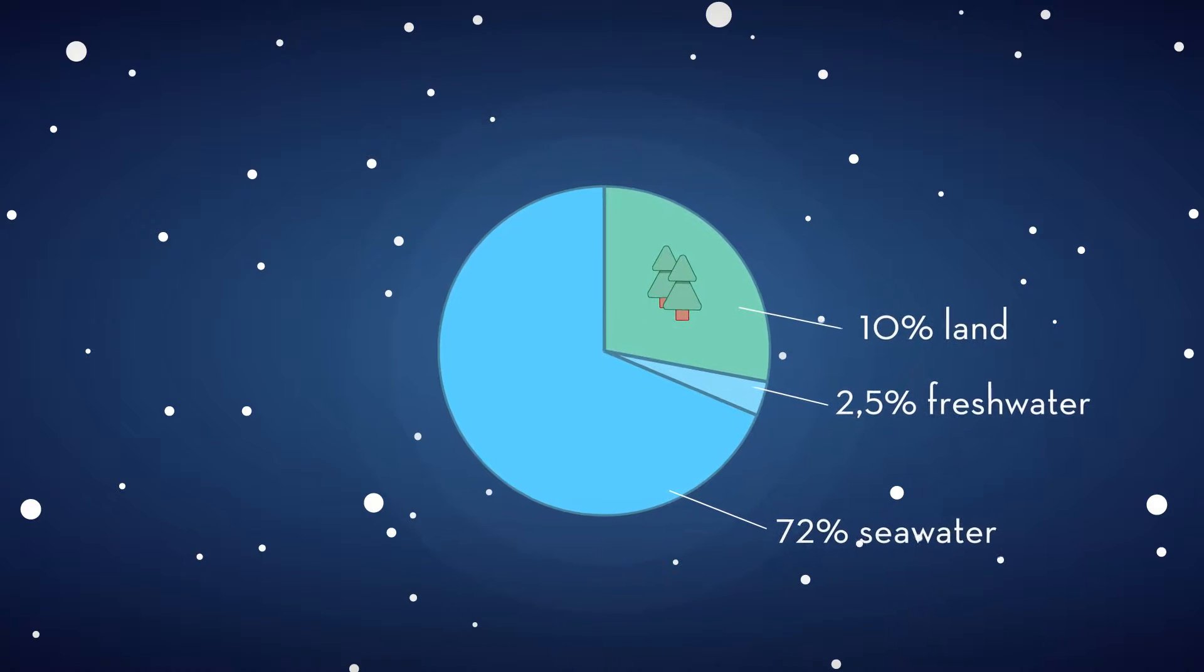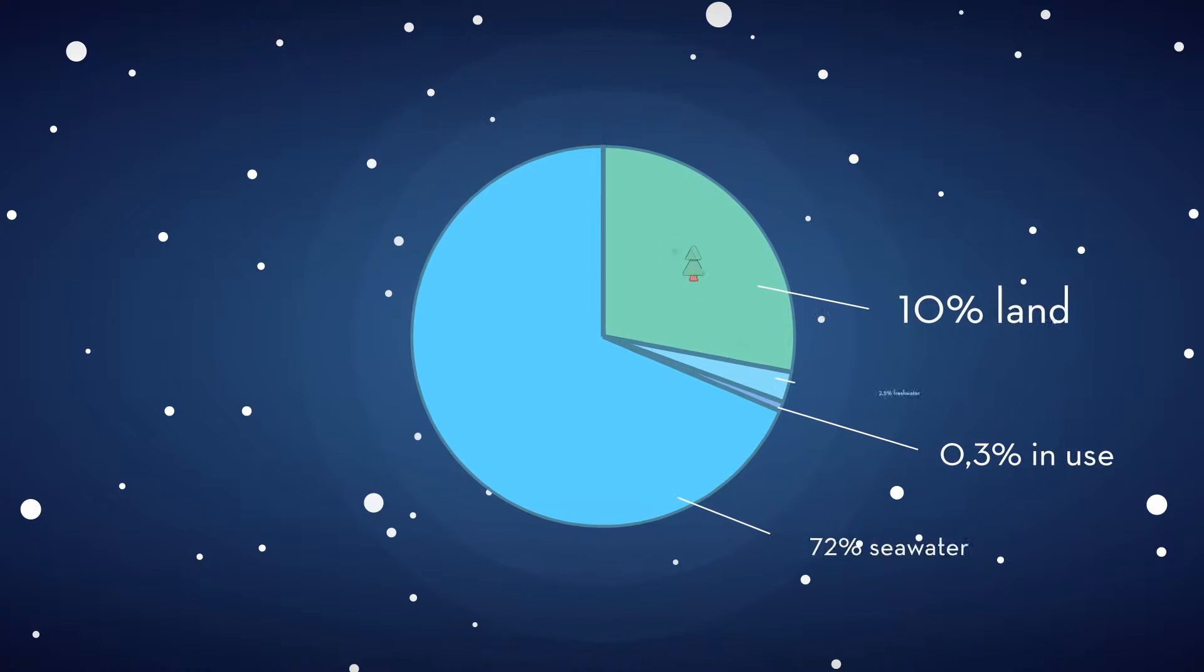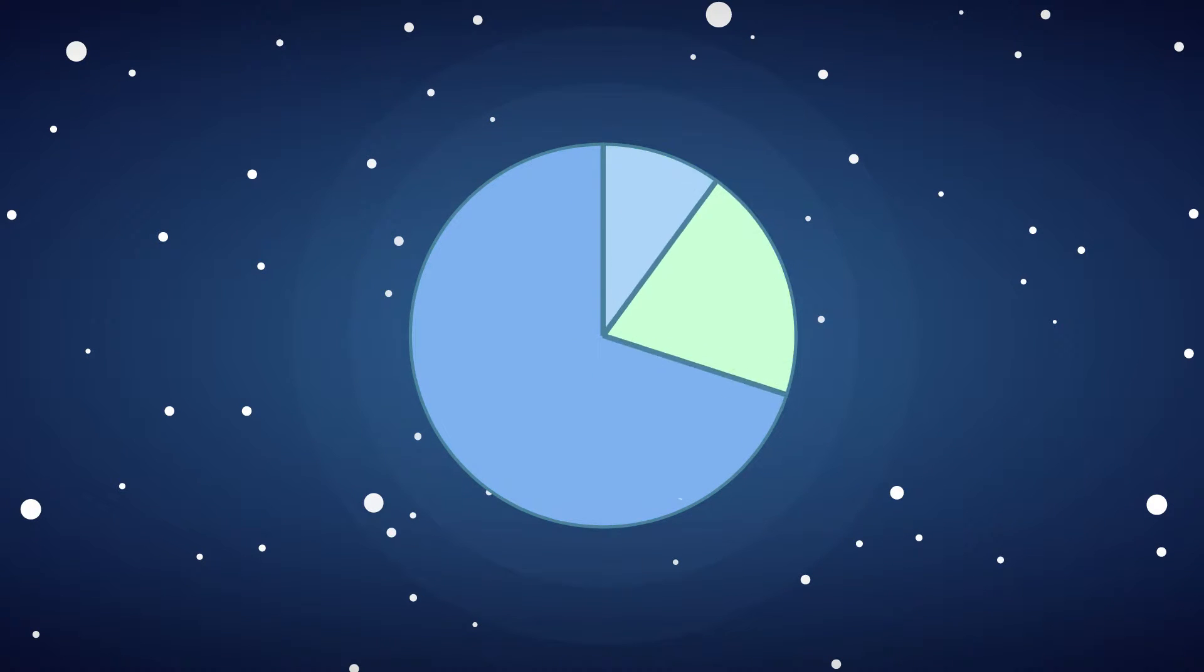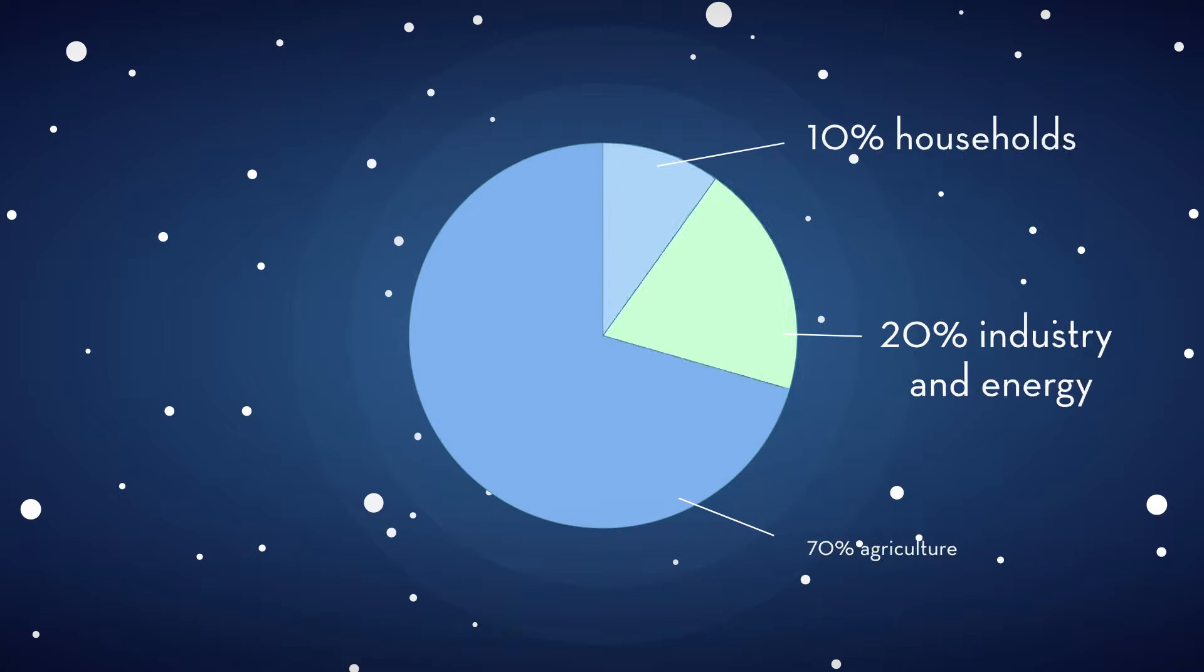Although 2.5% of the water is fresh water, we have access to only 0.3%. Of these 0.3 percentages, 70% goes to agriculture, 20% to industry and energy, and 10% to households.